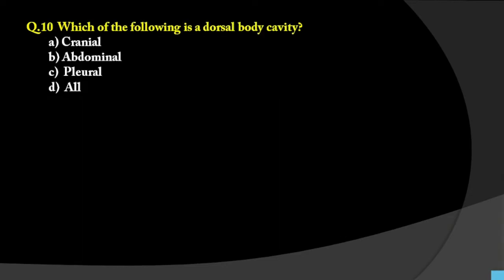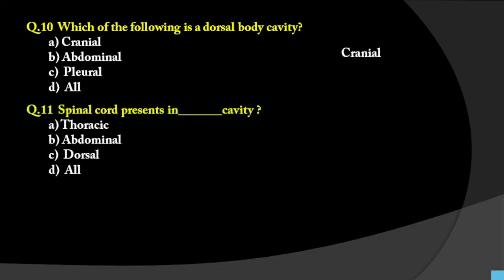Question number 10: Which of the following is the dorsal body cavity? Dorsal means the back side. Options are cranial, abdominal, pleural. The cranium contains the brain and spinal cord, which are placed in the dorsal cavity. Abdominal and pelvic cavities are lower cavities on the frontal part. The pleural cavity contains the lungs. CNS-related structures are present in the dorsal cavity, so the answer is dorsal (cranial).